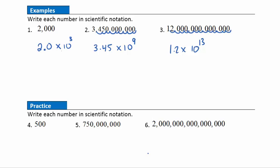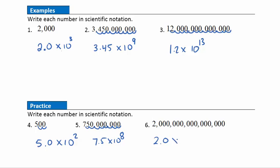Practice questions — writing large numbers in scientific notation. Question 4: 5.0 times 10 — the decimal needs to move two places, so that's times 10 to the second. Question 5: 7.5 times 10 — moving the decimal eight places, so 7.5 times 10 to the eighth. Question 6: 2.0 times 10 — counting fifteen places, so times 10 to the 15th power.